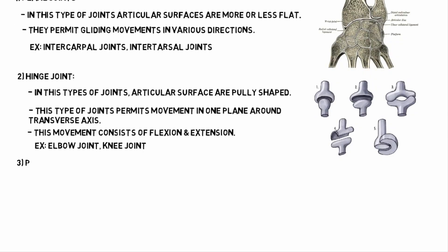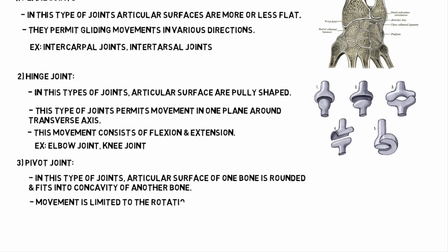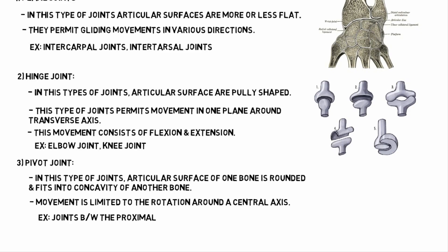Next is the pivot joint. In this type of joint, the articular surface of one bone is rounded and fits into a concavity of another bone. Movement is limited to rotation around a central axis. An example is the joint between the proximal ends of the radius and ulna.